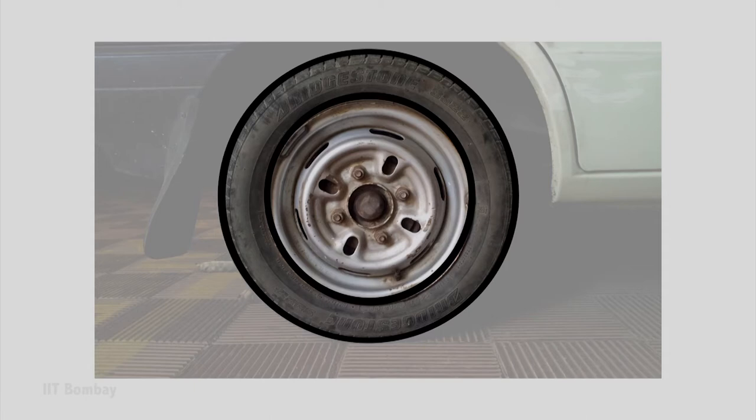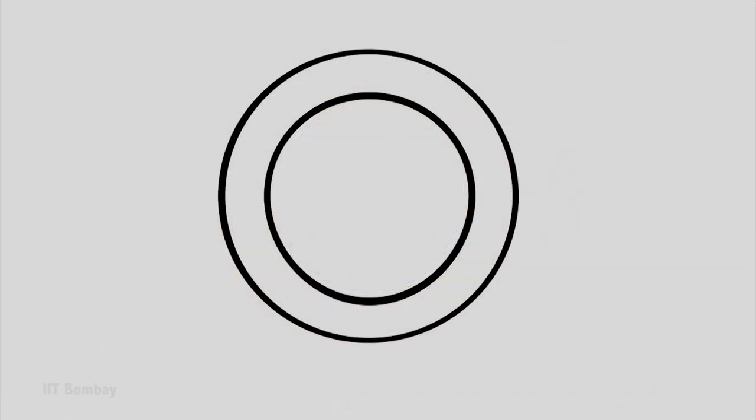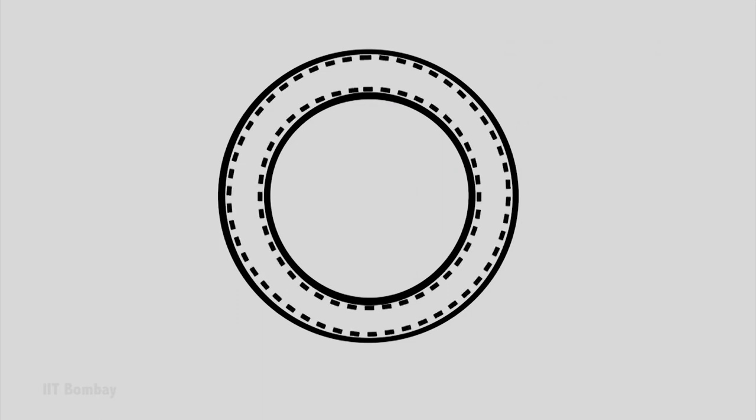Once we do that, we concentrate on the boundary, and to get rid of the confusion we inlay it with dotted lines. You see two circular dotted lines. Whatever is the toroidal zone — the ring-like zone in between — is our system. It contains the air which is in this car tyre.